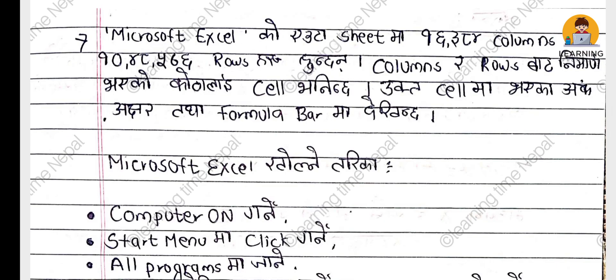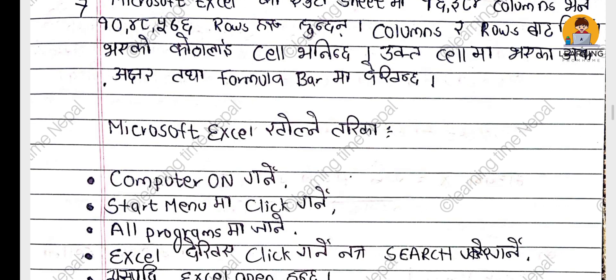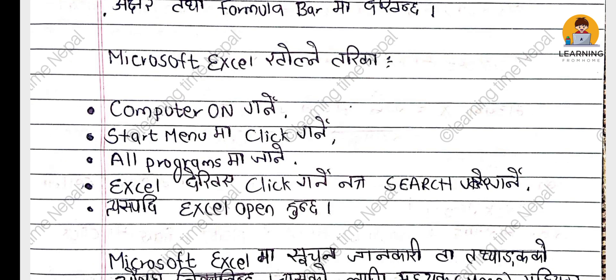Microsoft Excel has 16,384 columns and 1,048,576 rows. You can see the Excel file. Microsoft Excel is open. You can click on the computer, click on the Start window, click on All Programs, click on the Excel file, click on Search, and then the Excel file will open.